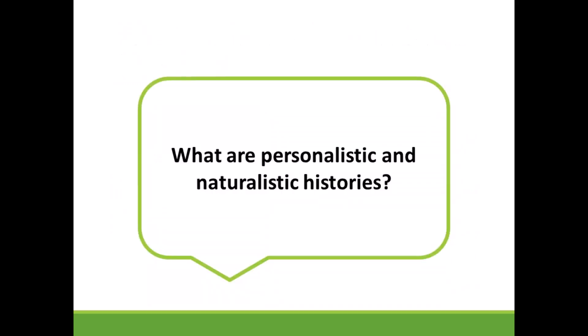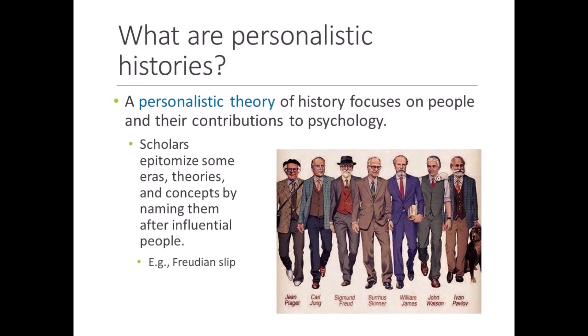What are personalistic and naturalistic histories? A personalistic history focuses on an individual historical figure, their life, their actions, and their contributions to psychology. For instance, a biography about Francis Sumner would qualify as a personalistic history — it includes information about his childhood, his family, his education, his experience in World War I, his training in psychology, his research, and so on. Interestingly, personalistic histories align with Western cultures and their interest in heroes and villains, and personal recognition.